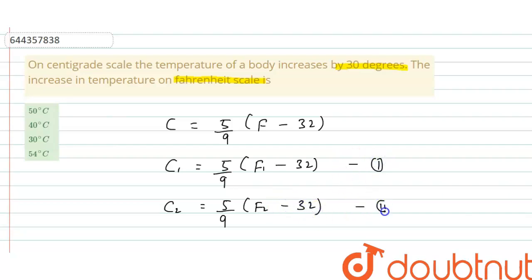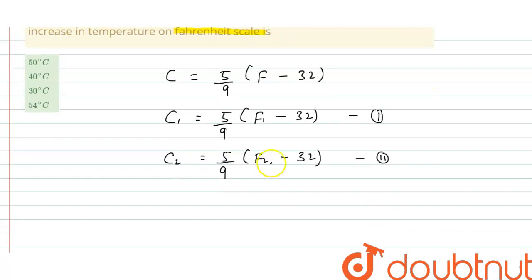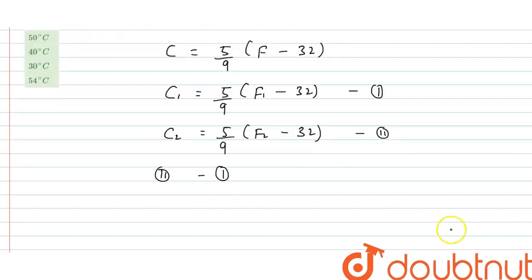Now, change in degree Celsius means C2 minus C1 is 30 degrees. So we have to find F2 minus F1. So subtract equation 2 from equation 1. Now this is C2 minus C1 equals 5 upon 9 times (F2 minus F1).